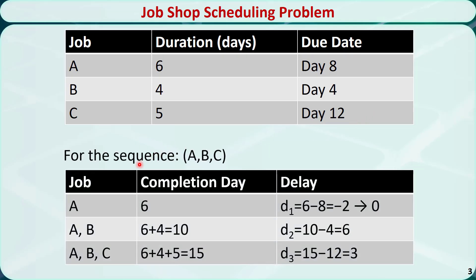Suppose we will process the jobs in the order A, B, and C. The duration of job A is 6 days, so it will be completed on day 6. The due date of job A is day 8, so the delay of the first job, job A, is D1 = 6 - 8 = -2, which means the job is completed ahead of time. So the delay is 0.